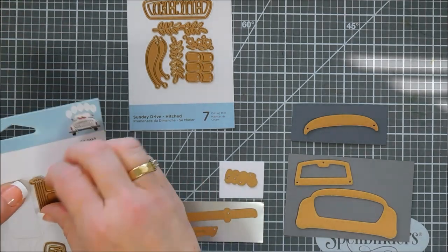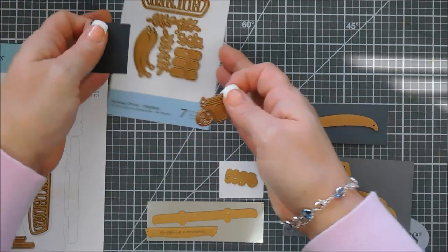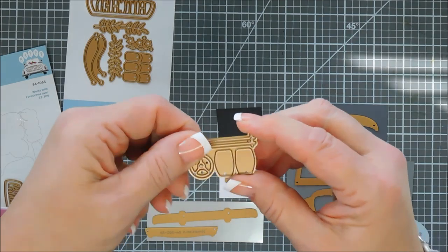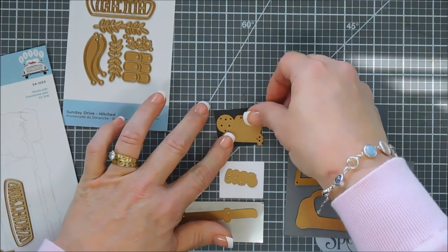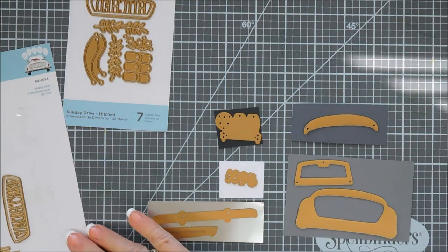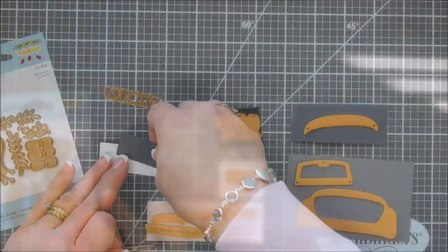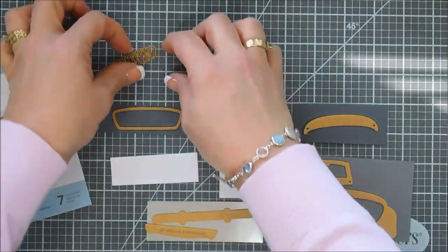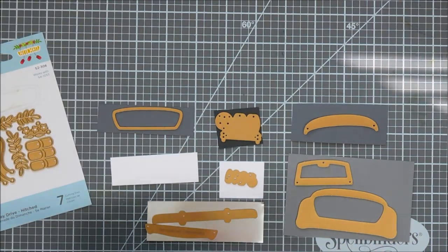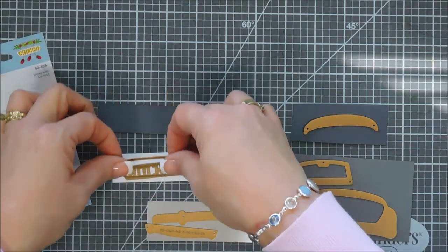For the side view mirrors and the taillights we're going to die cut it out twice with silver and then with white cardstock. I'm actually using whipped cream cardstock. We're going to use black licorice to cut out our tires and our luggage rack and also our steering wheel. That's all we're going to use from the main Sunday Drive set.